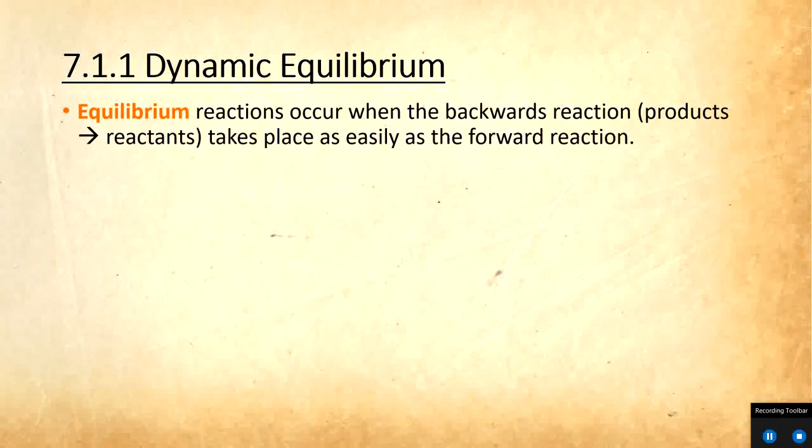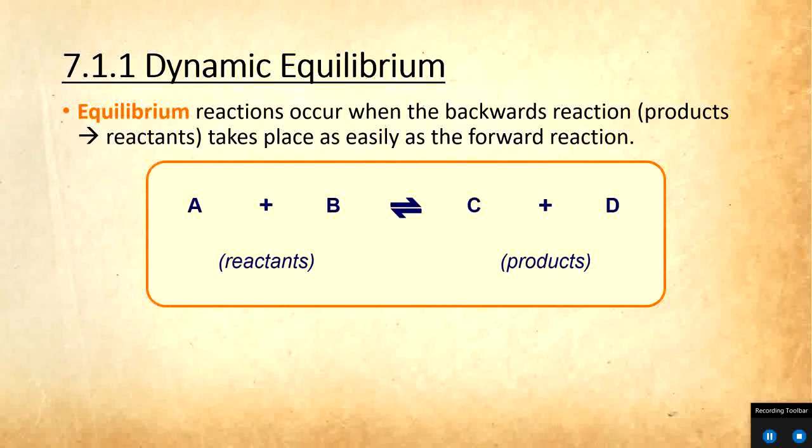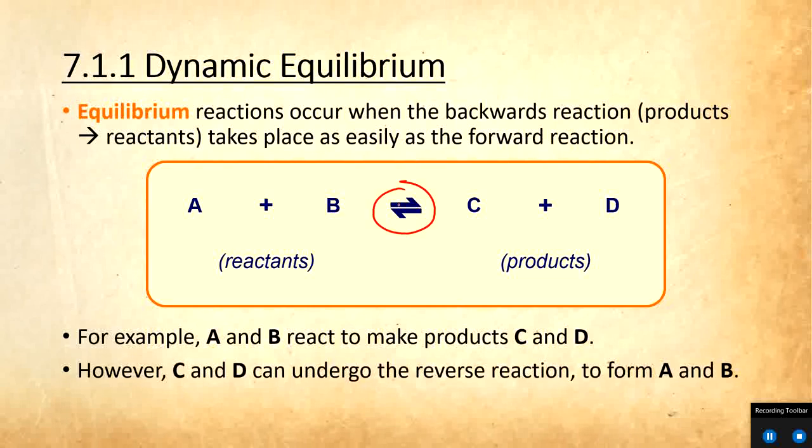Equilibrium reactions occur when the backwards reaction, so when we go from products to reactants, takes place as easily as the forward reaction. So the reactants can go forward, but just as easily the products can go back. Here's a general reaction, A plus B goes to C plus D. That symbol you see in the middle, this guy, that is our equilibrium arrow. So instead of drawing the yield arrow just going to the right, we draw this, which represents the reaction can go back and forward. For example here, A and B react to make C and D, but C and D can also react to form A and B.